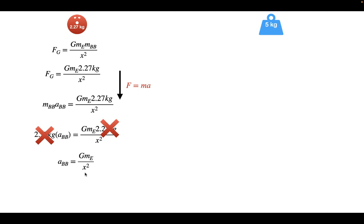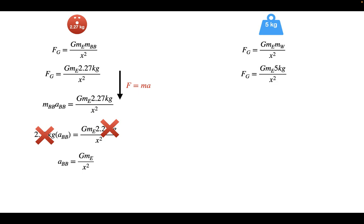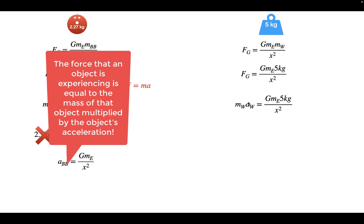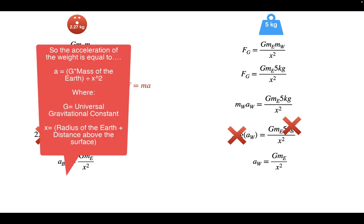What about the weight? The weight is 5 kilograms, nearly double the bowling ball's mass. Will this increased mass affect how fast it falls? Applying the universal law of gravitation, the gravitational force on the weight equals big G times the mass of the earth times the mass of the weight divided by x squared. When we substitute in the mass of the weight on both sides and cancel it out, we get: the acceleration of the weight equals big G times the mass of the earth divided by x squared.